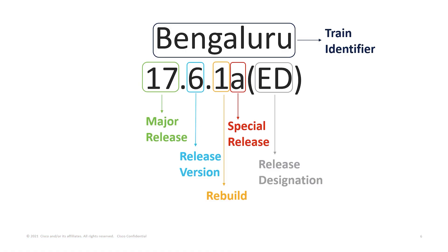Let's break down our first IOS XE release. Our train here is named Bengaluru, and this will be different as we take a look at IOS classic later in this presentation. We have a major release version of 17 and a release version of 6, and it is the first rebuild. There is also an 'A', which is an optional special release identifier. This lowercase letter will be present when there's specific support for a hardware platform or there are fixes for a select set of defects. An example where you would use the special release notation is when the major release came out, but there is now a hardware platform that wasn't initially available from that release. ED here is the type of deployment and means early deployment. There are also general and limited deployments as well.